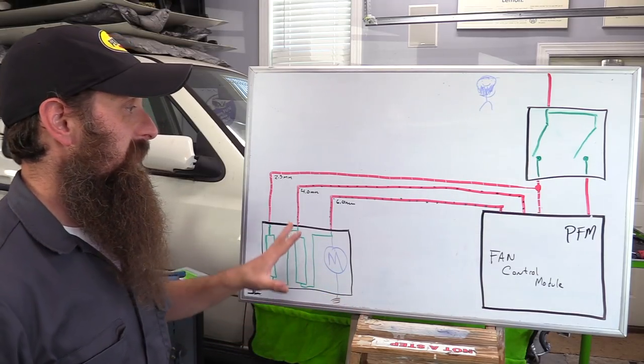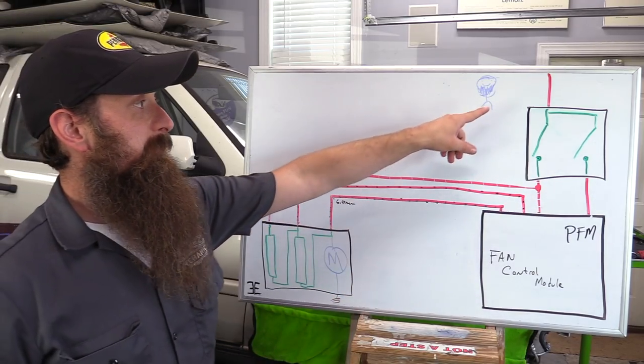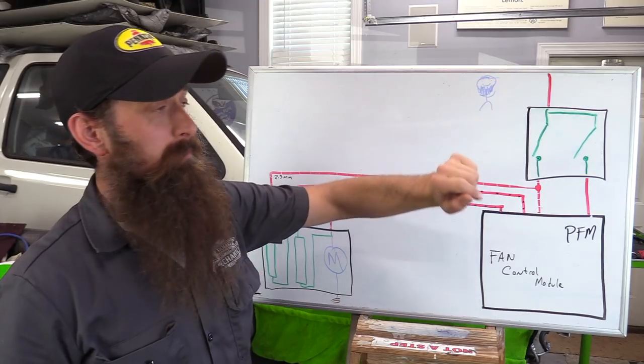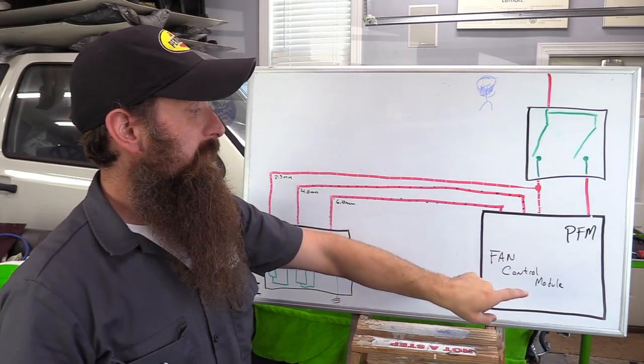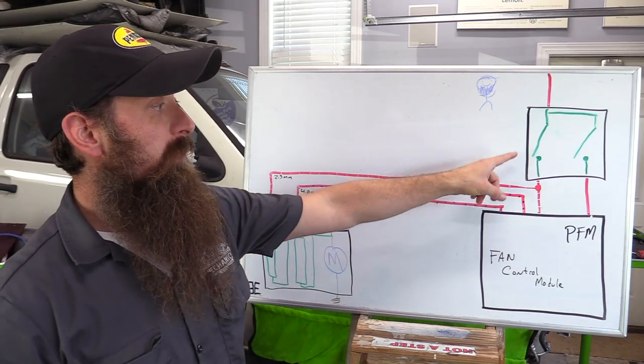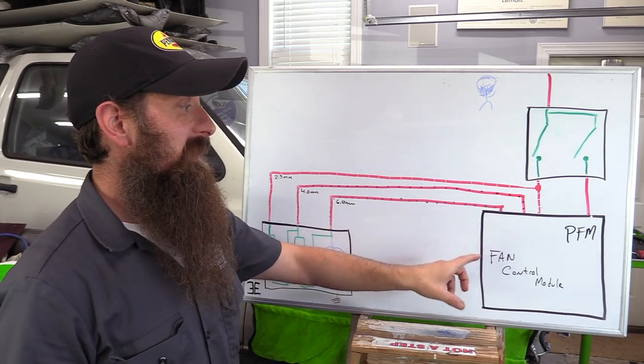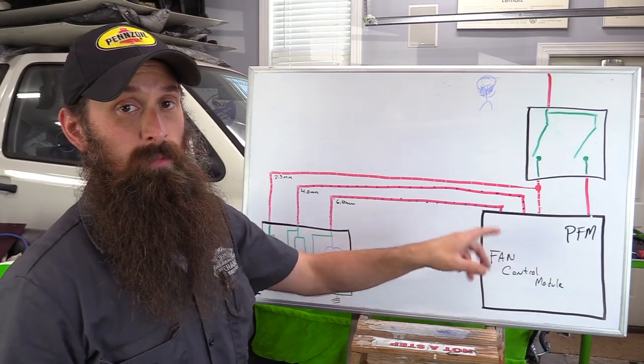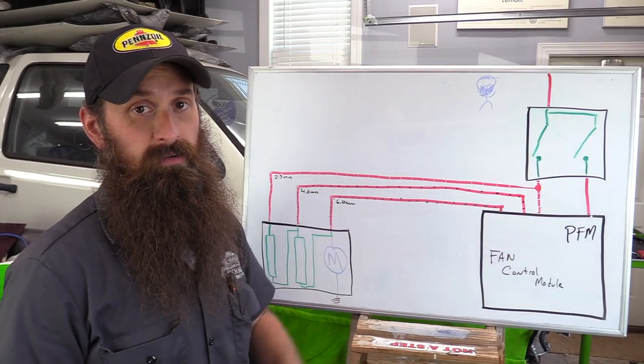For our basic fan setup, it's very simple. We have power coming in. There is a fuse up above here. We have our thermal switch. We have our fan control module. And then of course, our fan. There is also one more thermal switch for the high speed. It only connects to the fan control module and is on the next page of the wiring diagram.